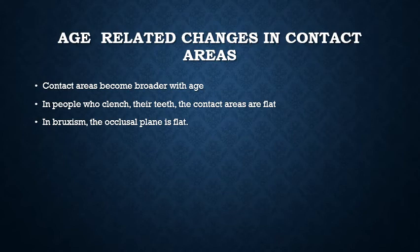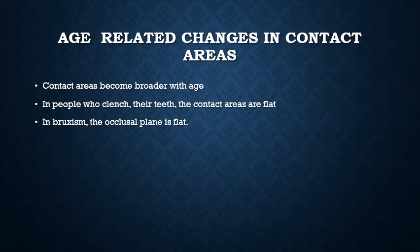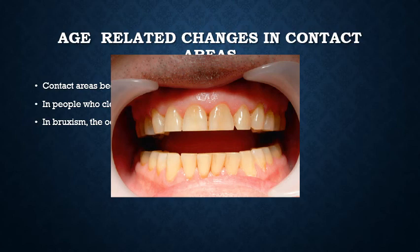Regarding age-related changes: initially, contact areas are just contact points where two teeth meet at specific points. With age, these contact points become contact areas and then broaden. In people who clench their teeth — a condition known as bruxism — the contact areas become flat and the whole proximal surface becomes a contact area; the occlusal plane also becomes flat.